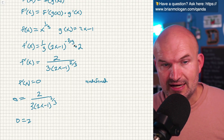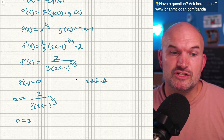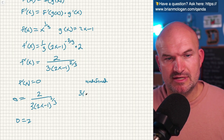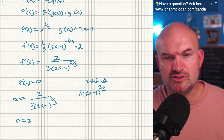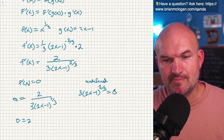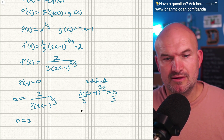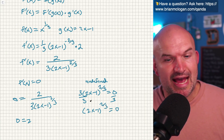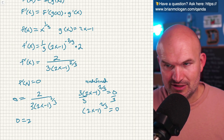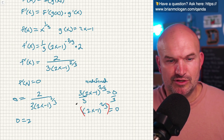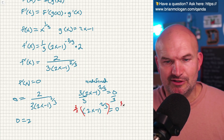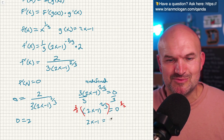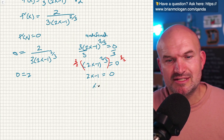Now let's look at when the derivative is going to be undefined. When we have a variable in the denominator, the function is undefined when the denominator equals 0. So setting 3 times (2x minus 1) to the 2/3 equal to 0: divide by 3, raise both sides to the 3/2 power, and we get 2x minus 1 equals 0. Add 1, divide by 2 — x is equal to 1/2.